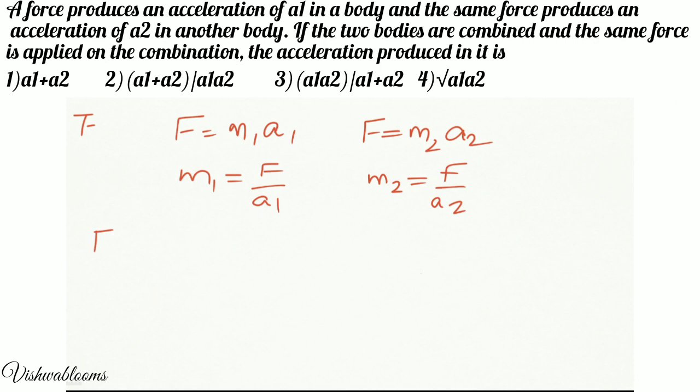Now let us find out the acceleration produced when both the masses are added up. In that case, the force applied is the same force. So F is equal to M1 plus M2 into A.